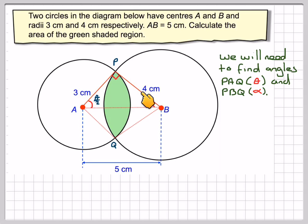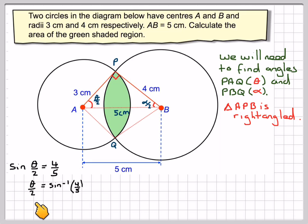We're going to use this right-angled triangle to find what half the angle is. Sine of theta by 2 is 4 over 5. This is the opposite side and this is the hypotenuse. Therefore theta by 2 equals sine inverse of 4 over 5, and theta equals sine inverse of 4 over 5.